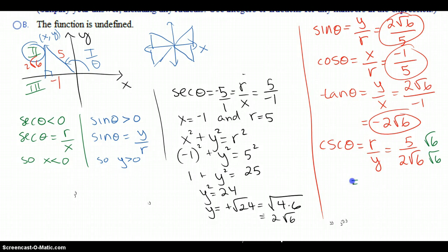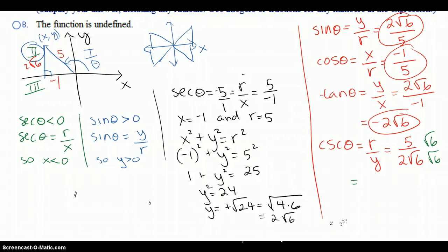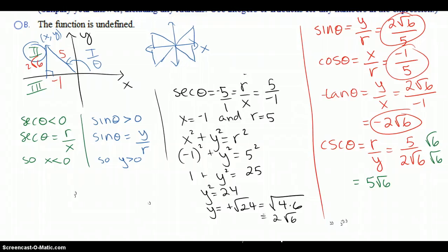So what does that become? That becomes 5 square root of 6 over 2 times square root of 36, but square root of 36 is just 6. So it turns out to be 5 square root of 6 over 12. That's the answer for that one. So you have to be careful with that.